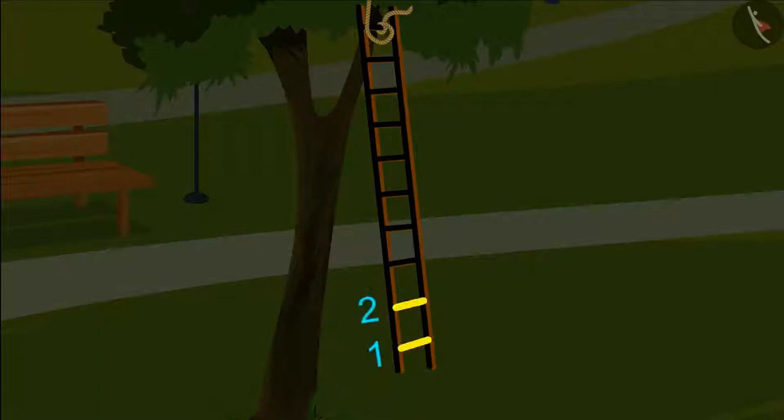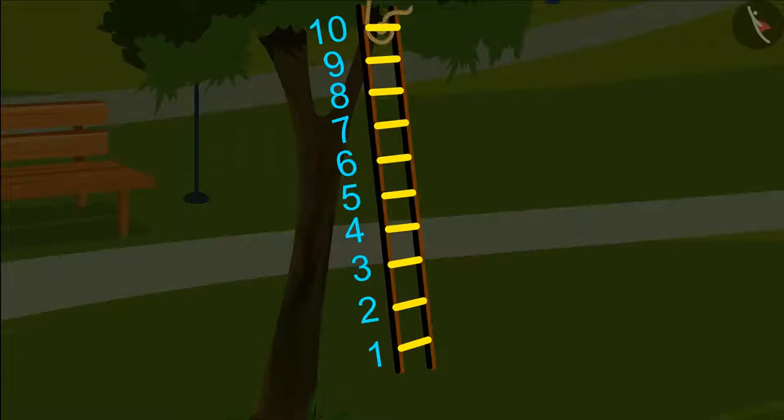Kids, we have written the numbers 1 to 10 on the ladder. Then it will be easier to see how the monkey is playing.